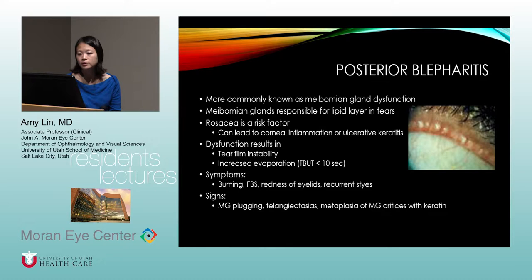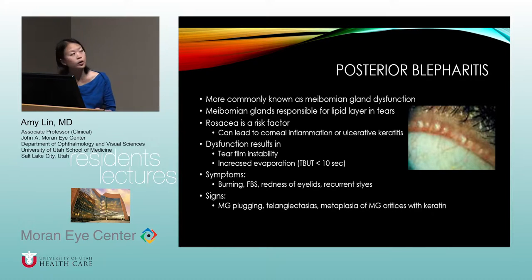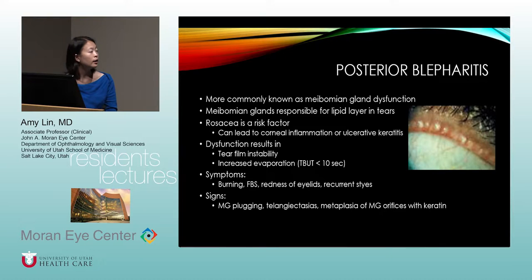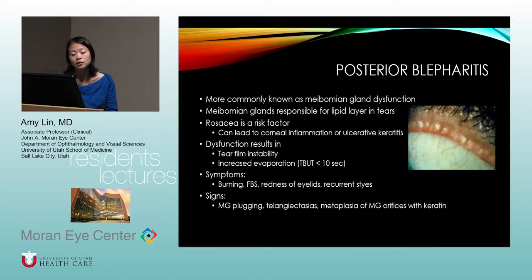Posterior blepharitis, more commonly known as meibomian gland dysfunction, occurs because the meibomian glands are responsible for producing the lipid layer in the tears. When you have plugging of the meibomian glands, tears evaporate faster than normal. Rosacea is a risk factor. If you have severe blepharitis, it can lead to corneal inflammation or even an ulcerative keratitis.